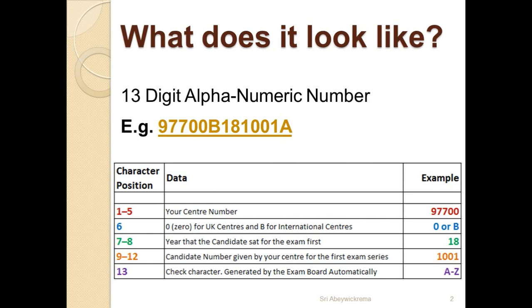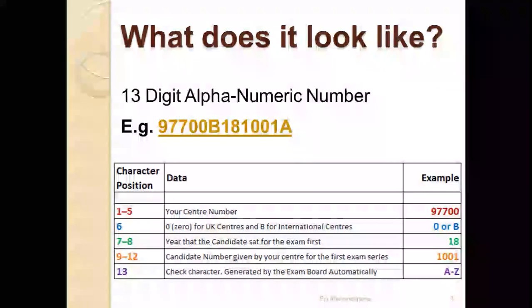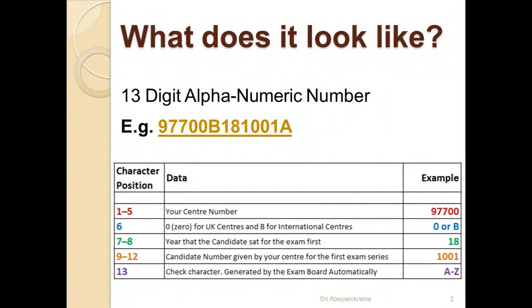Whenever you take your examination, you go to an examination center — it could be your school, a private organization, or a recognized examination center. That center has its own number; in this example it's 97700. The next character, position 6, is an English letter. If you were to take this examination for Edexcel IAL in the UK, it would be 0, but for any international student taking it outside the UK, this is by default the English letter B. So if you are an international student, your UCI number will have the letter B as the sixth character.